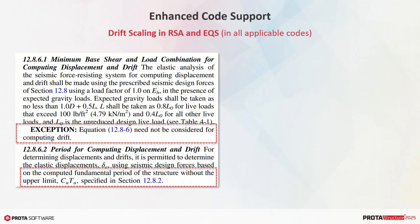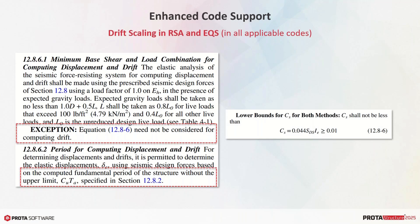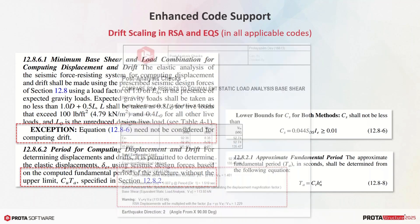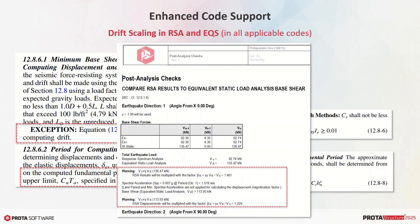Protostructure now more elaborately considers seismic code clauses outlining the scaling and limitation of drifts. For example, in India and Peru codes, displacements are not scaled when RSA is performed. On the other hand, ASCE 7 requires scaling of displacements with a different factor, ignoring minimum base shear and limiting periods. All of this is reported and supported in Protostructure 2025 with details presented in a neat report.